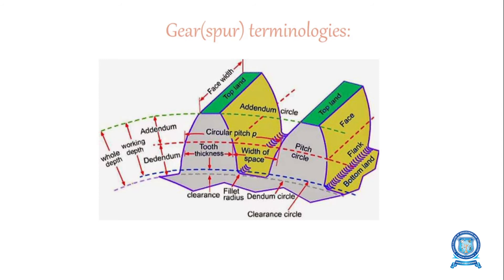Next we are going to see spur gear terminology. The terminologies include: whole depth, working depth, addendum, dedendum, tooth thickness, clearance, fillet radius, dedendum circle, clearance circle, bottomland, flank, face, topland, pitch circle, width of space, and addendum circle. We are going to study each of these spur gear terminology items.